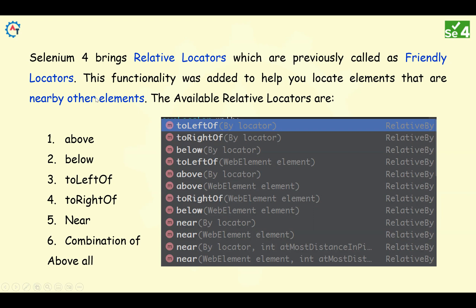If you want to find one element that is near to another element, then with the help of that other element you can find the element which you want.